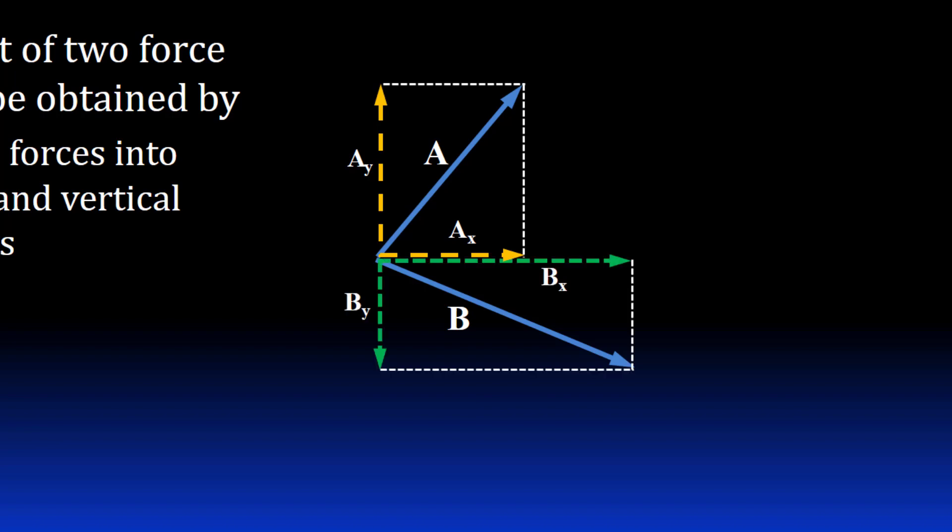The green lines represent BX, the horizontal component of B, and BY, the vertical component of B.